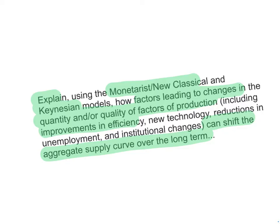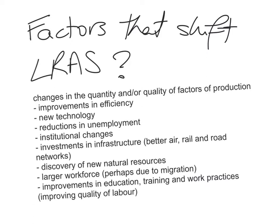These include improvements in efficiency, new technology, reductions in unemployment, and institutional changes. The factors that shift the Long Run Aggregate Supply are those that essentially increase the productive capacity and the potential output of the economy. They are the same factors that would cause the country's Production Possibilities Curve, the PPC, to shift outwards — basically, factors that change the quantity and/or the quality of the factors of production.